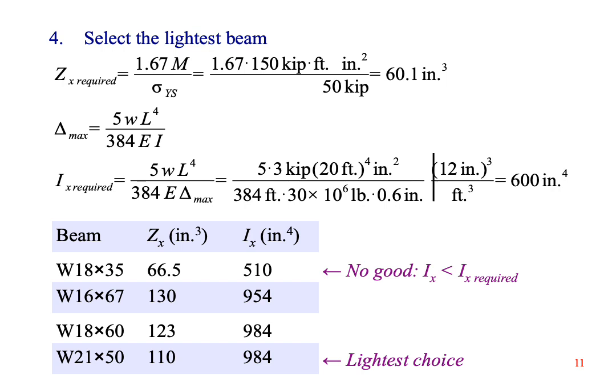Step 4 is not the same as before. We still calculate the required Z as 60.1 inches to the third power, but we also have to think about deflection. Appendix F tells us that the maximum deflection of a simply supported beam with a uniform distributed load is 5 times the weight per length times the length to the fourth power, all divided by 384 times Young's modulus and the moment of inertia of the beam. The unknown in this problem is the moment of inertia because we haven't picked a beam yet. We need a beam with an I value of at least 600 inches to the fourth power.